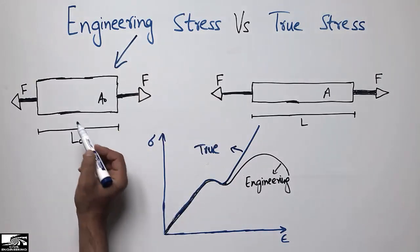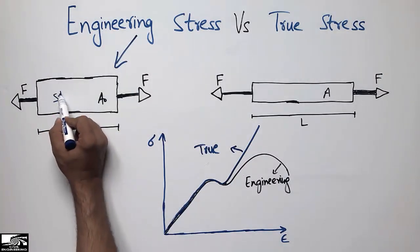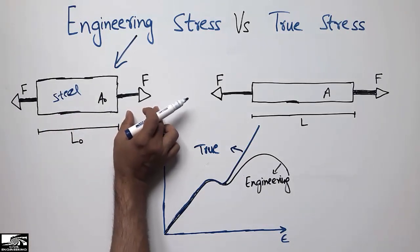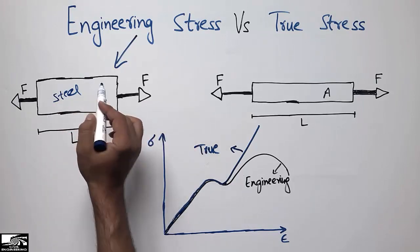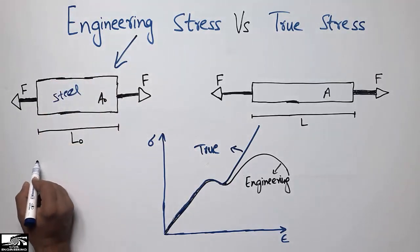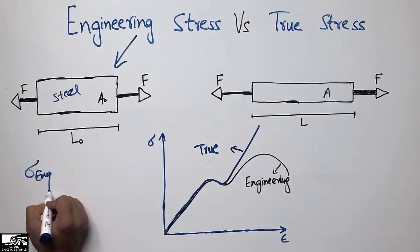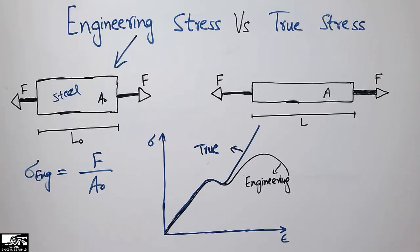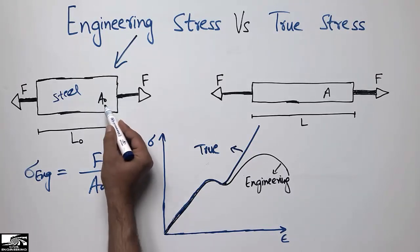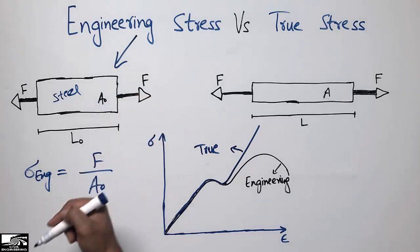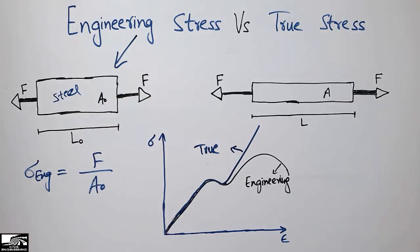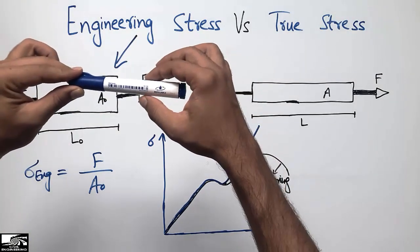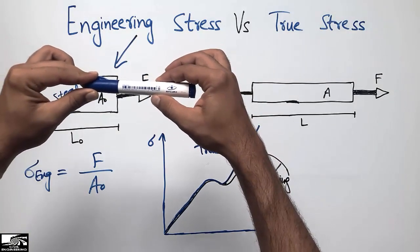Consider this steel bar loaded in tension by applying a tension force on both sides. Engineering stress is defined as the force per unit area. The main point is that we consider the area of this object which is not actually reduced. If I apply a tension force from both sides, the area of this object should be reduced in reality, but we don't consider that.